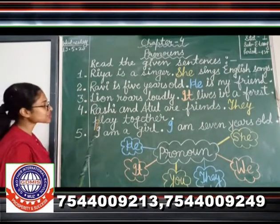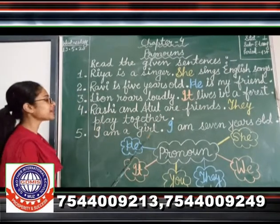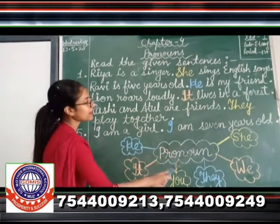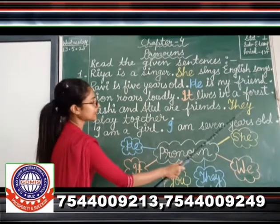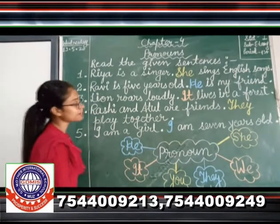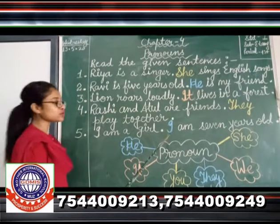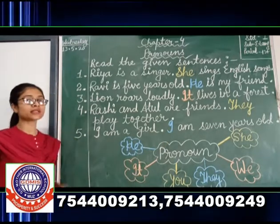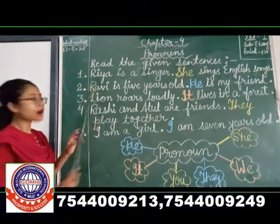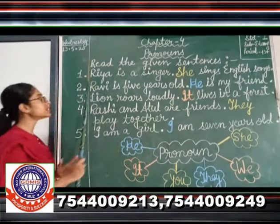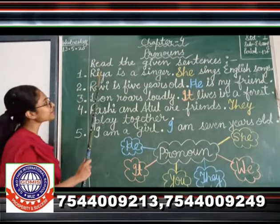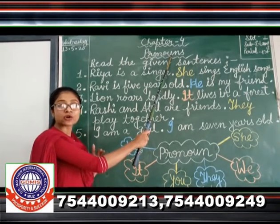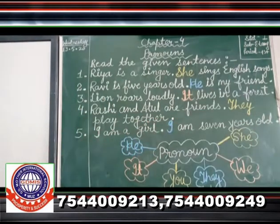See the next sentence. Rashi and Atul are friends. They play together. In place of Rashi and Atul — they both are nouns — we have used 'they'. In place of these two people, we have used 'they'. I am a girl. I am 7 years old. In place of I, we have used 'I', because when we talk about ourselves personally, then we use 'I'. So the concept is: yeh jo hain yeh sabhi noun hain, aur inki jagah humne ek naya word use kiya hai. They are called pronouns.